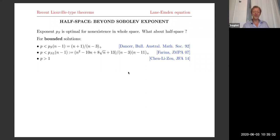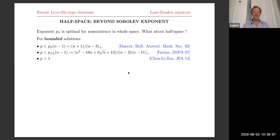His proof was by moving planes — show monotonicity of the solution and end up with a solution in the whole space but in n minus one dimension, by looking at the limit as x_n, the normal variable, goes to infinity. Fifteen years later, Alberto Farina was able to use similar arguments combined with new studies on stable solutions. He enlarged the nonexistence range for bounded solutions to the Joseph-Lundgren exponent in n minus one dimension. In particular, up to dimension 11, there are no bounded solutions.